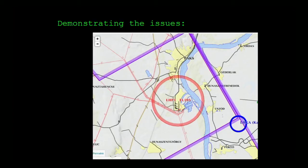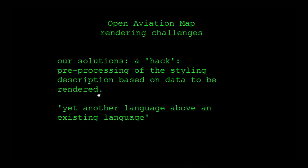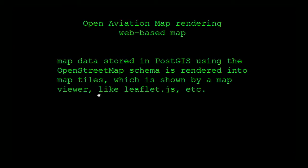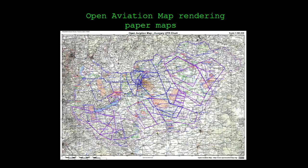If you zoom out, you want the same thickness of lines and the same symbology regardless of the viewing area - totally impossible with these tools currently. So we ended up pre-processing the styling documents according to the particular rendering we want to do, pre-generating the styling document that works with GeoTools from a template. What we can do with rendering: we can render web-based maps, and we can render paper maps - a shrunk-down screenshot of one of our paper maps, which when printed is quite large.